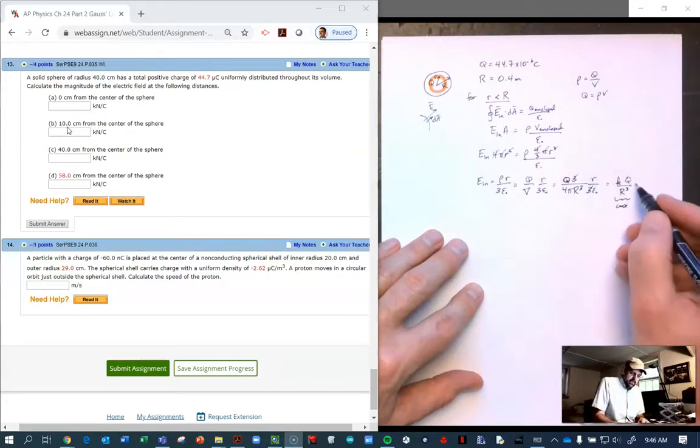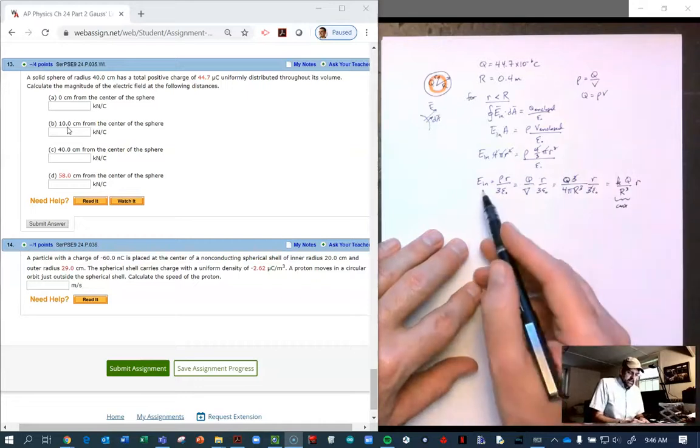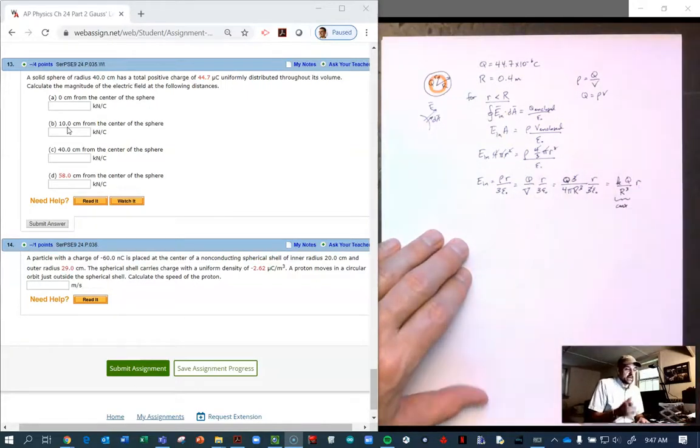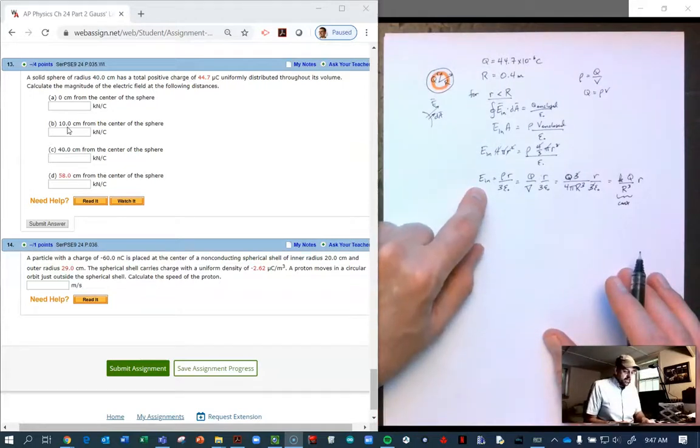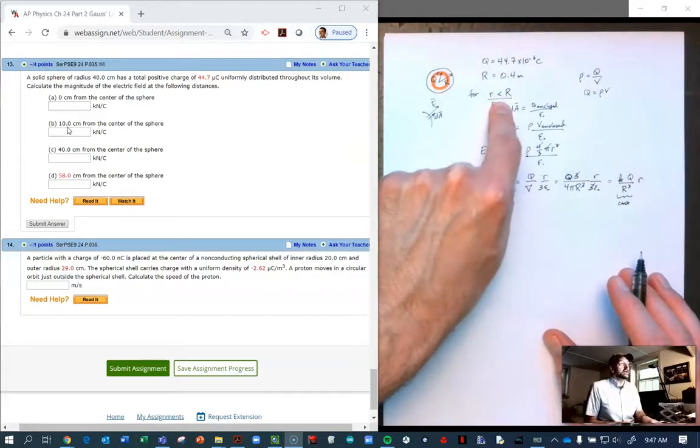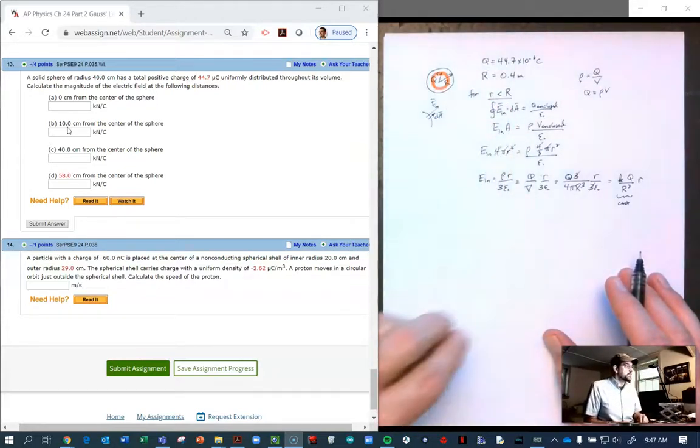So all of that is constant, and then we're left with a r. So on the inside, the electric field is proportional to r. As r gets bigger, E gets bigger. But this is only true until you get to big R. This is only true on the inside.